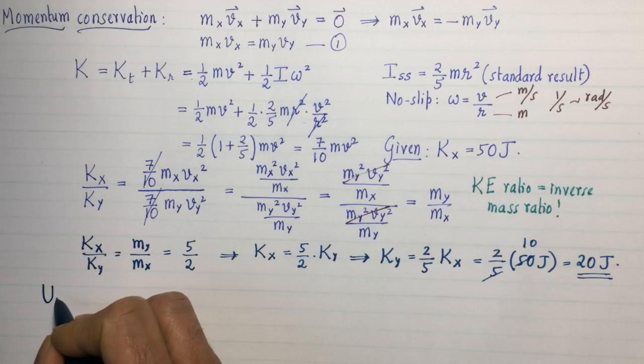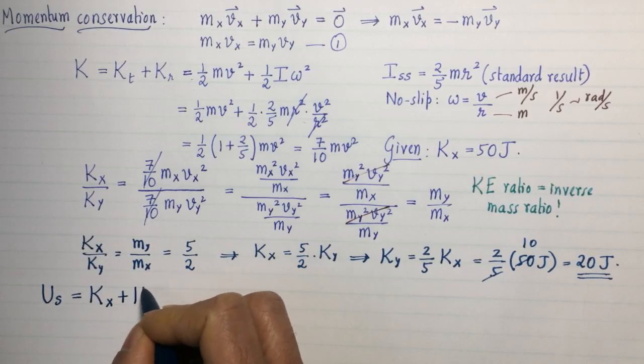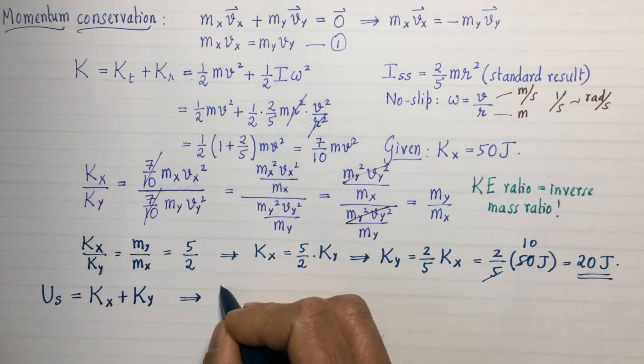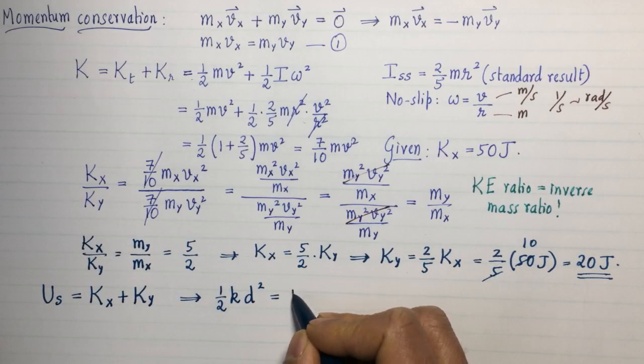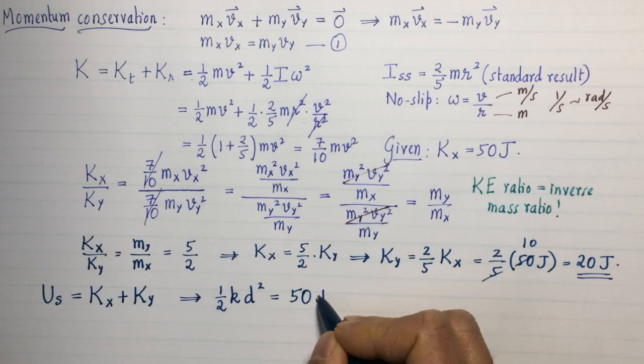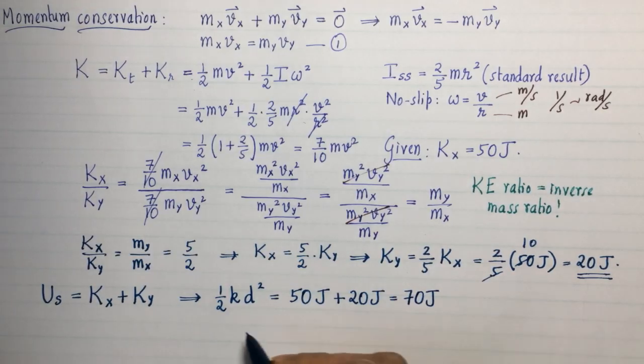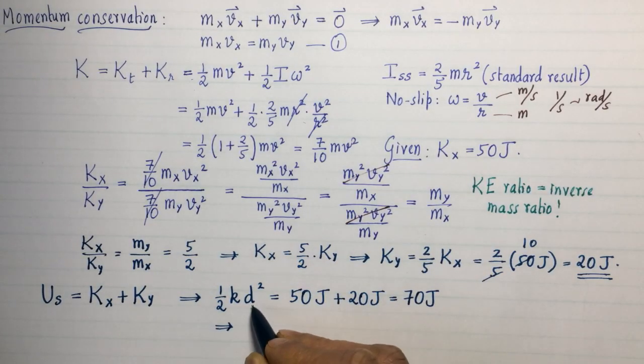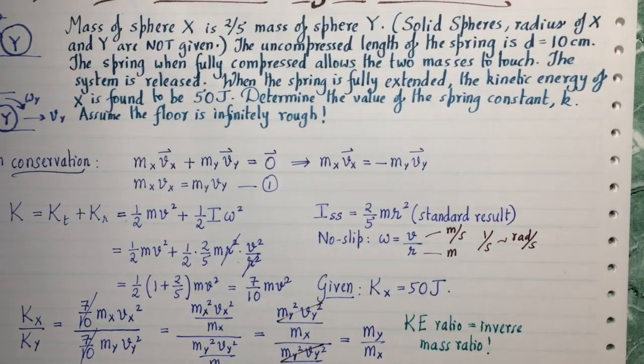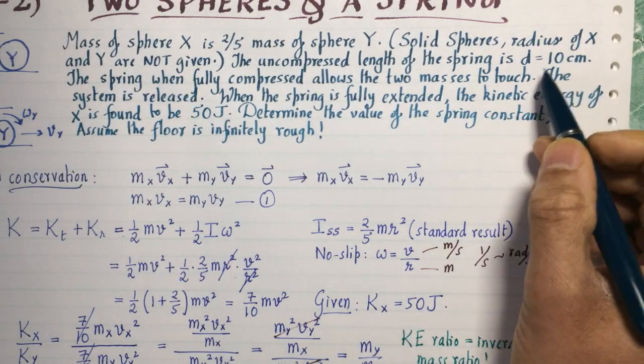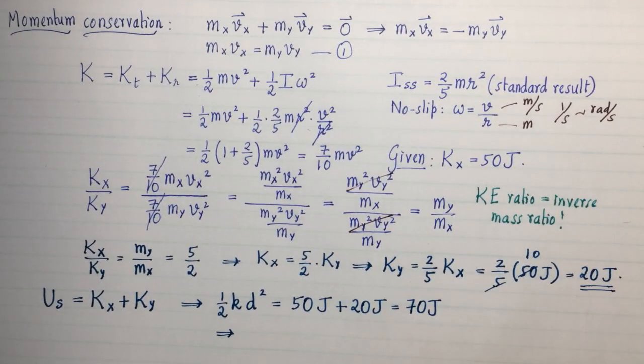Notice that the heavier object gets less kinetic energy. That seems like a paradoxical result, but it's governed by momentum conservation. Momentum is the judge that decides how much kinetic energy each object gets. Once you have that, just use conservation of mechanical energy. Initially, the mechanical energy was entirely spring potential energy. So the spring potential energy becomes the kinetic energy of X plus Y. This tells me that (1/2)kd² = 50 joules + 20 joules = 70 joules.